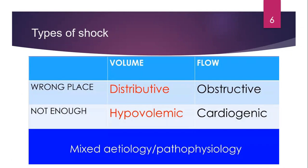In terms of volume and flow: for distributive shock the volume is usually the issue; for obstructive shock the flow is usually in the wrong place; and for cardiogenic shock the flow is usually not enough. There can also be a state where you have a combination of these types, called shock of mixed etiology.